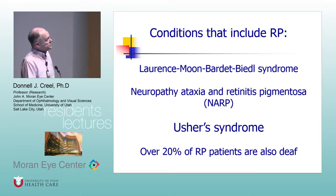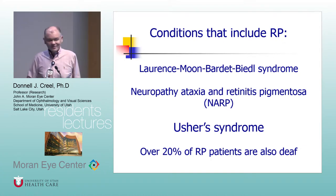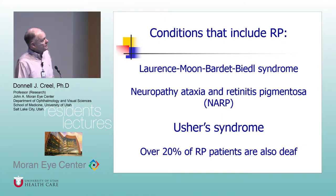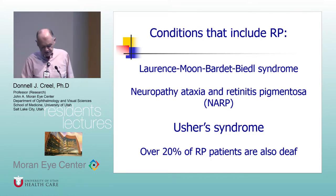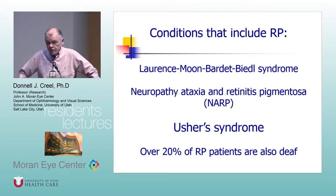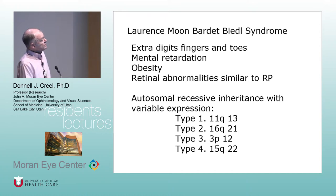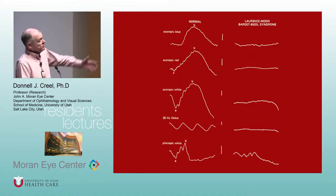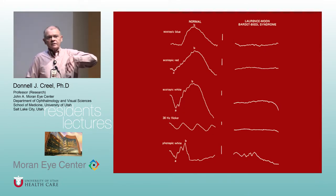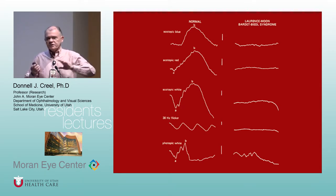We see NARP patients in neuro, and the Lawrence Moon-Bardet-Biedl syndrome — we see several of those a year during exams under anesthesia at primary. Lawrence Moon: extra digits, hypogonads, usually overweight, not developmentally delayed. Regardless of what retinitis pigmentosa is attached to among the 45 or 50 known syndromes that have it as part of them, the expression variability is the same.